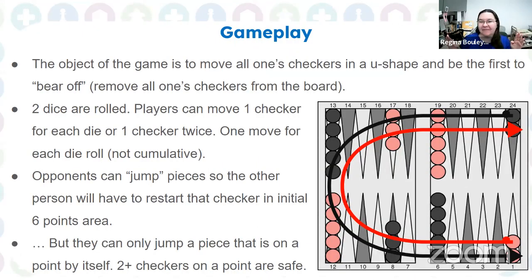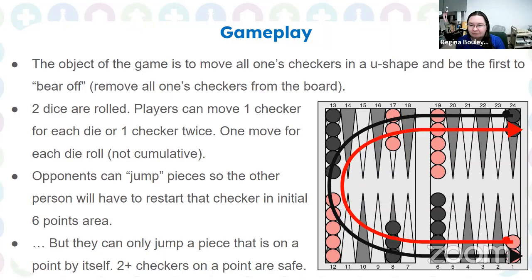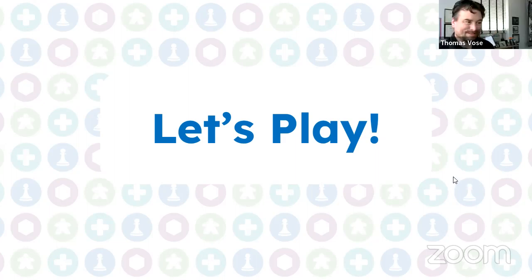The basic goal of gameplay is to get all your pieces off the board. You move in a U-shape and must get all pieces into your six home points before you can start bearing them off. Dice rolls drive movement. If a piece is alone on a point it can be hit and must restart from the beginning — and you can't move any other pieces until that piece re-enters the board.